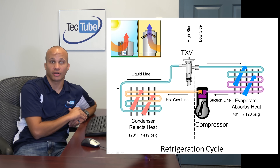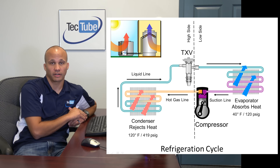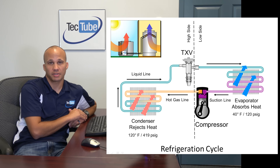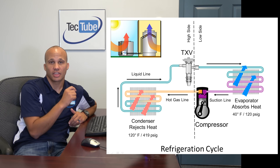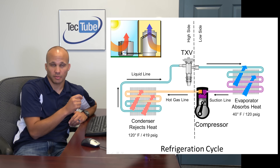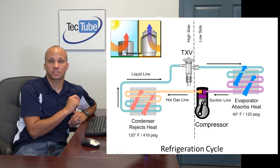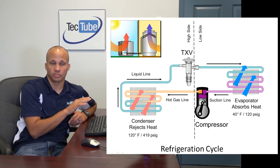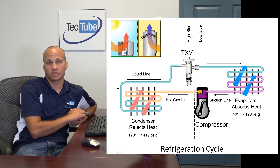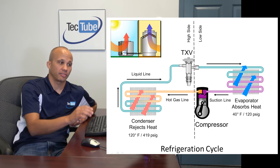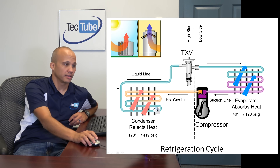Pressure, temperature, and volume are inherently connected to one another. If I have a fixed volume like on a refrigerant piping system and I change the pressure, the temperature must change — no ifs, ands, or buts about it. Those things work together no matter what.